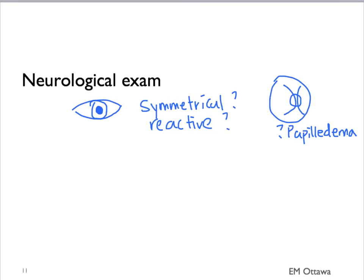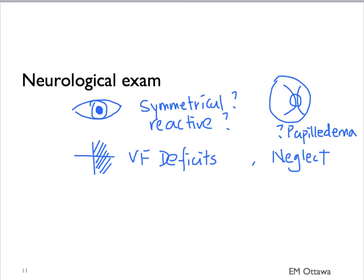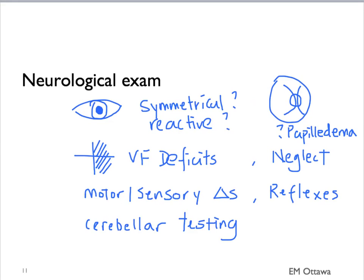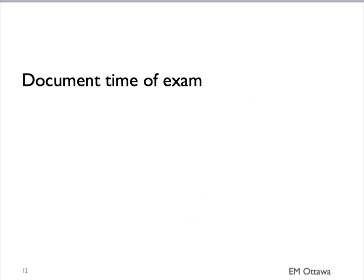We will also look for visual field deficits and neglect, and examine for any deficits or asymmetry in motor or sensory function. We will check reflexes and perform cerebellar testing. If possible, the patient's gait should be examined. As the patient's neurological status may change with time, the time of the examination should be documented. If the patient has changed, we need to repeat at least part of the neurological exam.